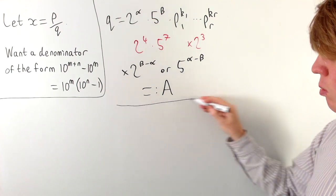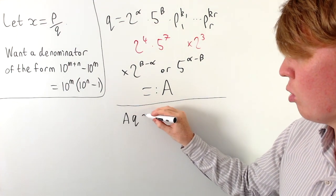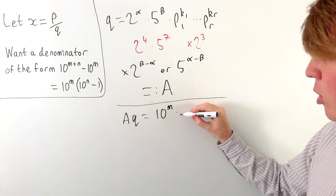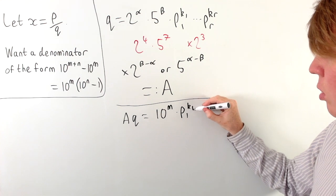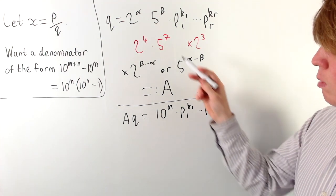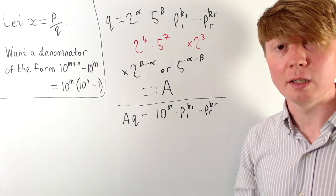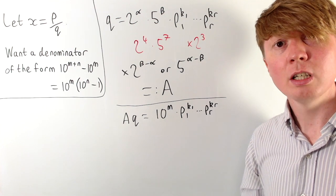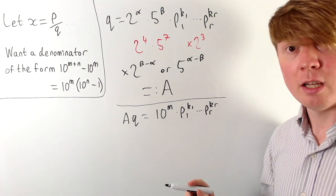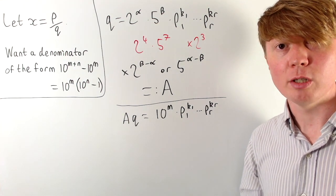Once we've multiplied by capital A, we've got A times Q equal to 10 to some power — we'll call it 10 to the m — multiplied by all of the remaining prime factors. In the case where alpha and beta are 0, so if there aren't any 2s and 5s in the prime factorisation of Q, we could just leave this as 10 to the power of 0, taking m as 0, and that would work for our purposes.